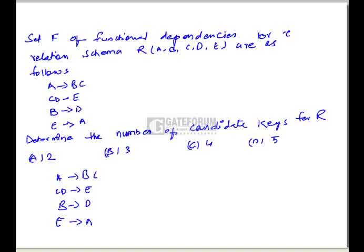Let us find the closure of A. A+ gives ABC from A→BC; from B we can get D, so we have ABCD; from CD we can get E. So all attributes are derived from A, meaning A is one of the candidate keys. Also, since A is derived from E, E is also one of the candidate keys.